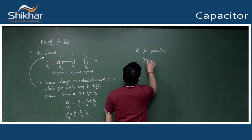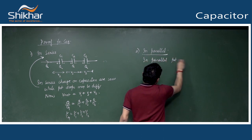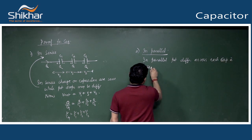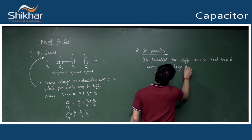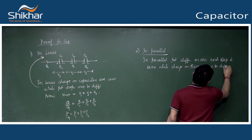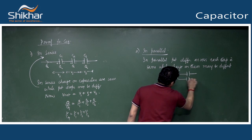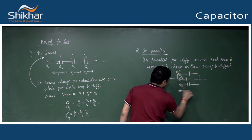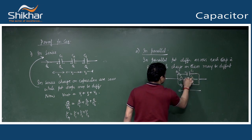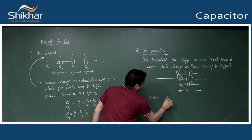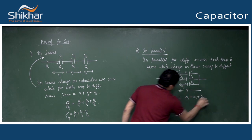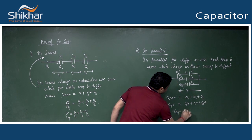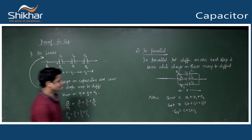In parallel combination: potential difference across each capacitor is the same, while charge may be different. Q_net = Q1 + Q2 + Q3 and each Q = CV, so C_eq·V = C1·V + C2·V + C3·V. Therefore C_eq = C1 + C2 + C3.